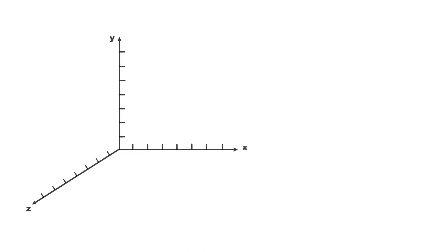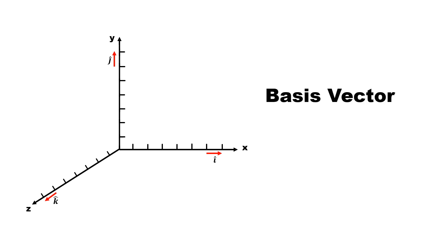To understand tensors, first let's understand components and basis vectors in a coordinate system. This is a simple three-dimensional Cartesian coordinate system with three axes x, y, and z. One unit vector is defined for each of the three axes: i-cap for the x direction, j-cap for the y direction, and k-cap for the z direction. These unit vectors are also called coordinate basis vectors. Their length is 1 and their direction is along the axes.